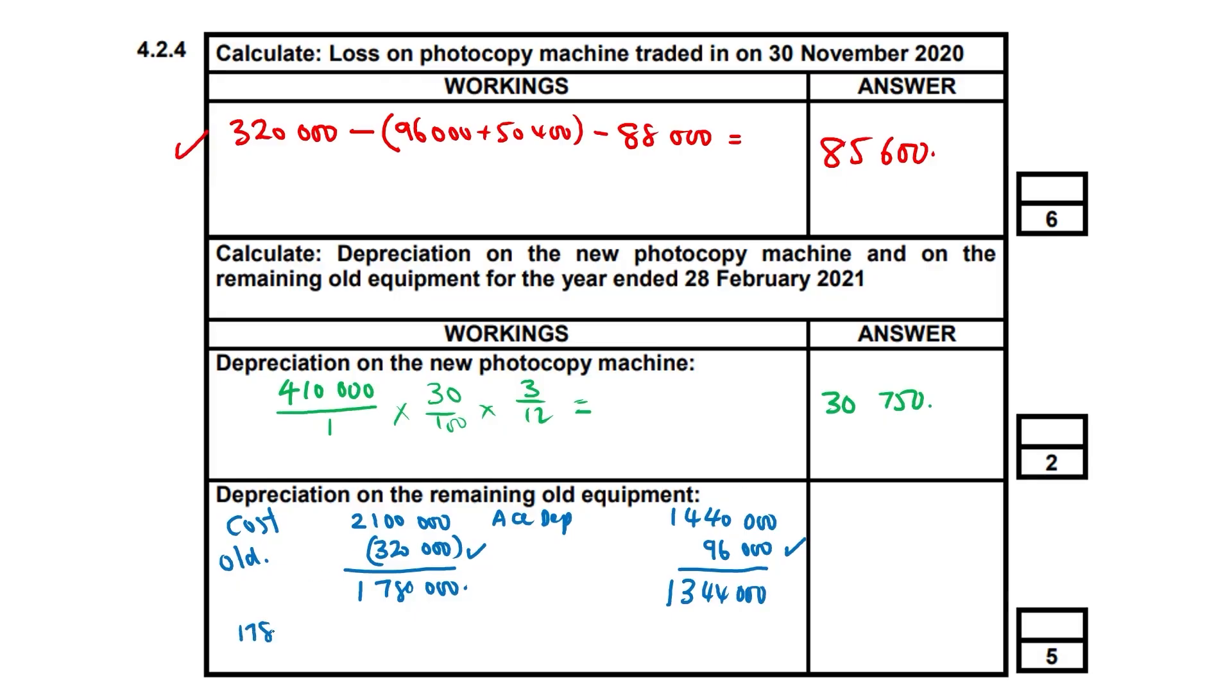$1,780,000 minus $1,344,000, all that over 1 times 30%, and that answer is going to go in there. We arrive at an answer of $130,800. Of course, if they asked you for the total depreciation figure, you'd add these two up and get $161,550. They didn't ask for that, so there's no need to show the total depreciation at year end on equipment that stayed with us or equipment that joined us during the course of the year.